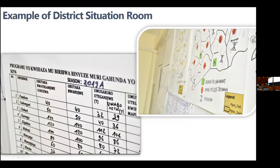This is another example of what we call the situation room. The situation room currently tracks all the performance of indicators from different sectors — health, education, social protection, gender, and others. But the way they update the situation room is manually: there's a board, there's paper, they go and write numbers manually. So we thought that automating the whole process will help us come up with an automated dashboard to help people make decisions.